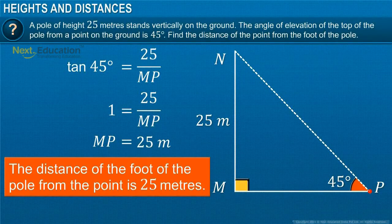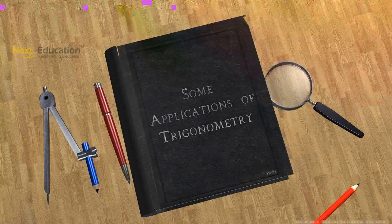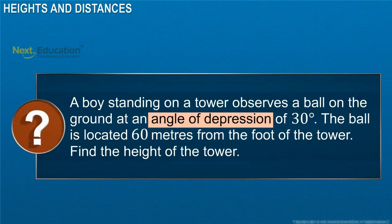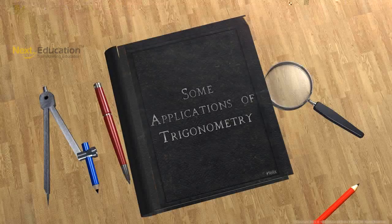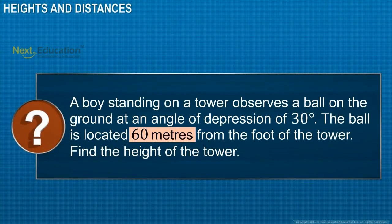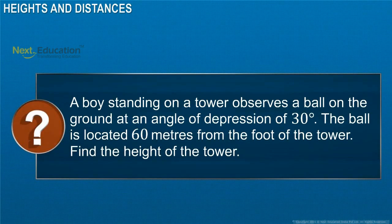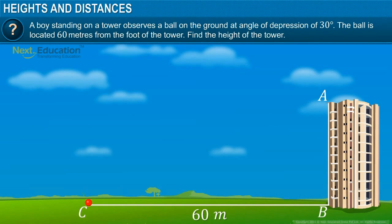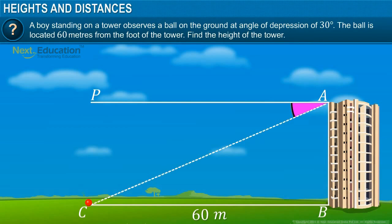Let's look at another example. A boy standing on a tower observes a ball on the ground at an angle of depression of 30 degrees. The ball is located 60 meters from the foot of the tower. Let's find the height of the tower using the angle of depression. Let AB represent the tower. The ball is located 60 meters away from the foot of the tower. The boy observes the ball at an angle of depression of 30 degrees. When this line is joined, a triangle is formed.